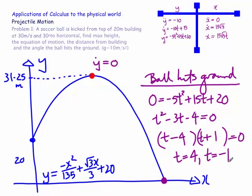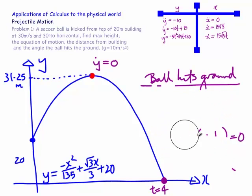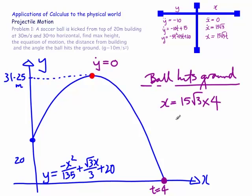Factoring: (t minus 4)(t plus 1) equals 0, so t equals 4 or t equals minus 1. Since time must be positive, t equals 4 seconds. The x position at t equals 4 is: x equals 15 root 3 times 4, which is 60 root 3 metres. That's where the ball lands — 60 root 3 metres from the building.